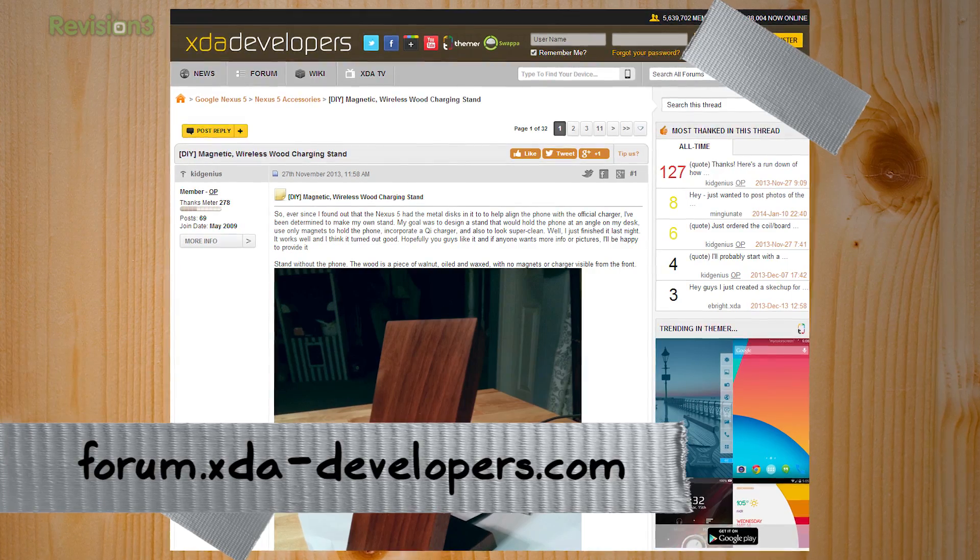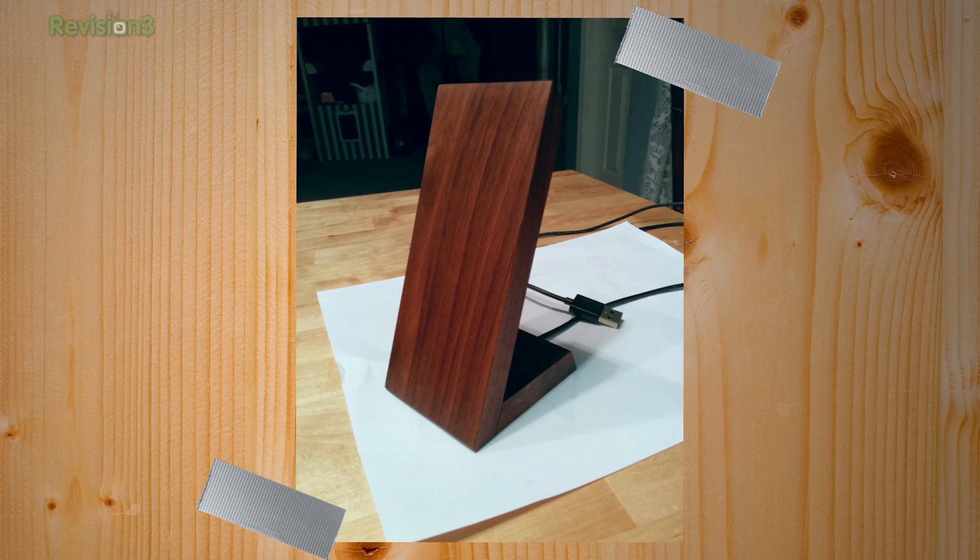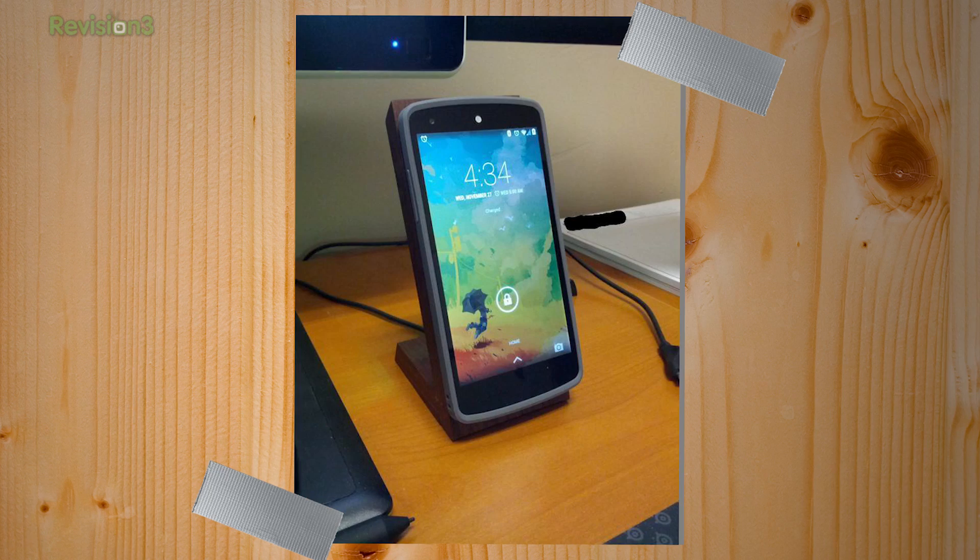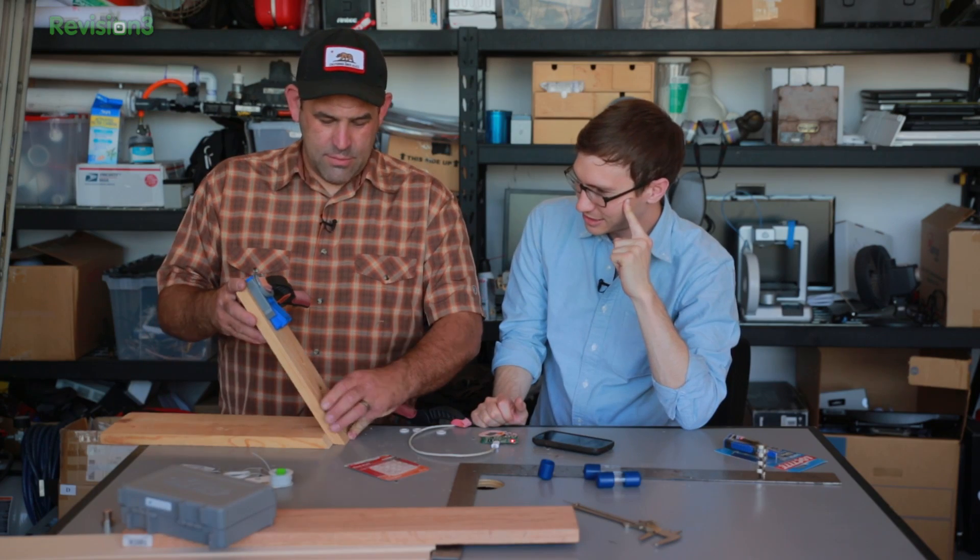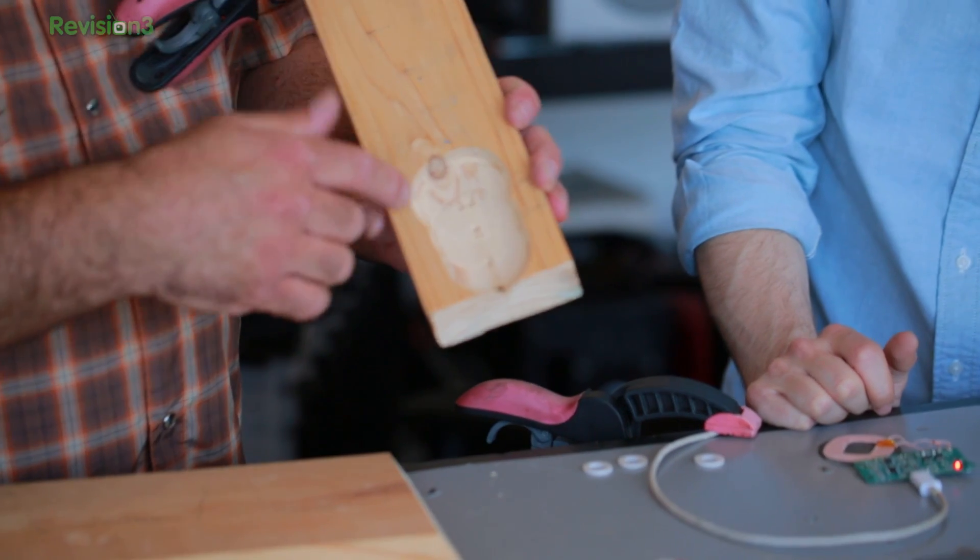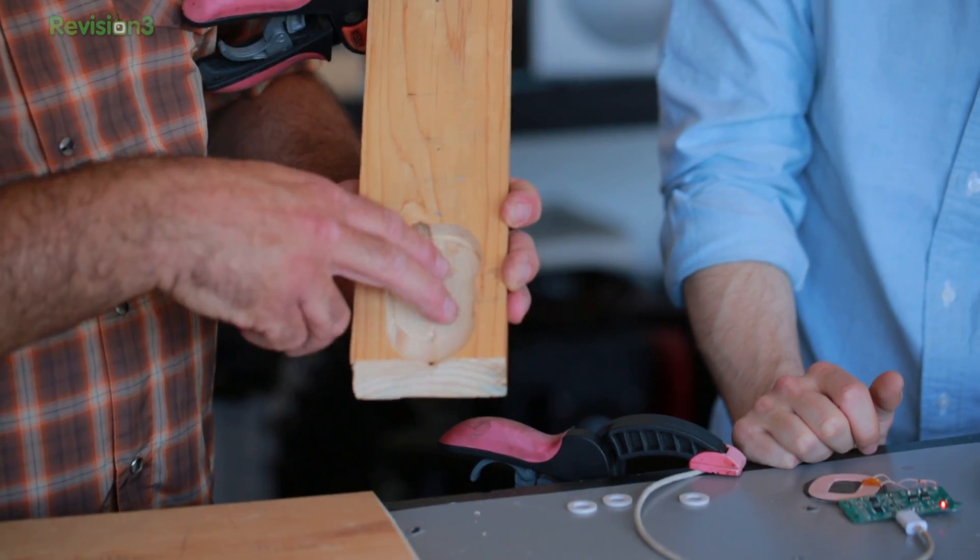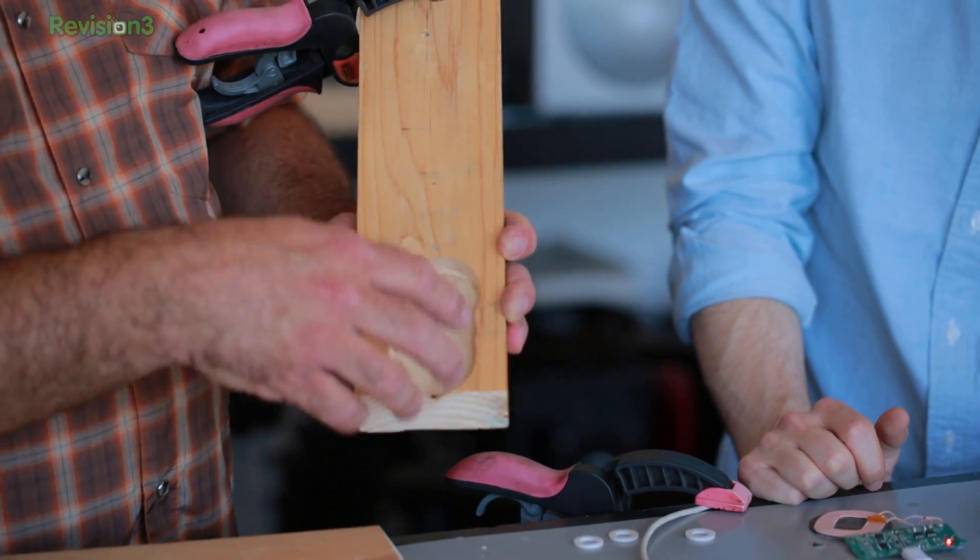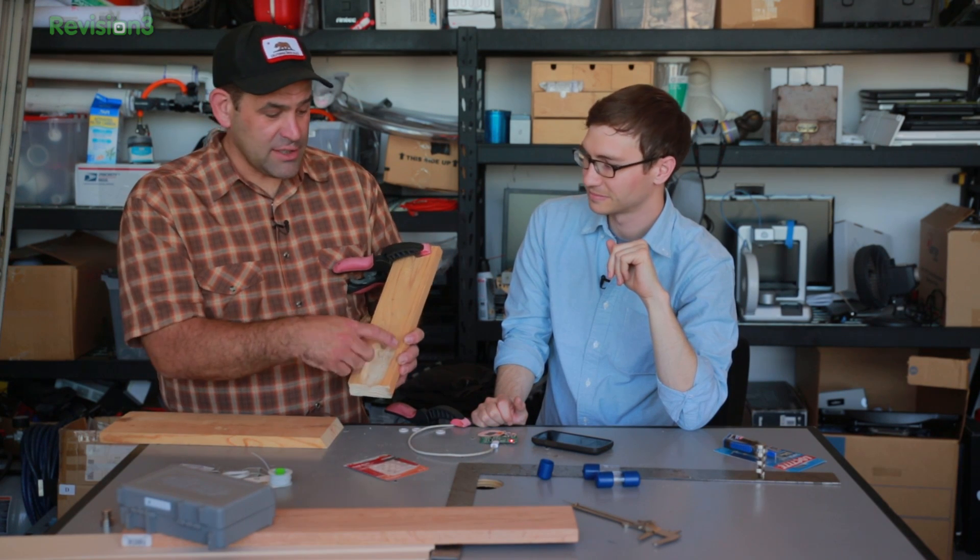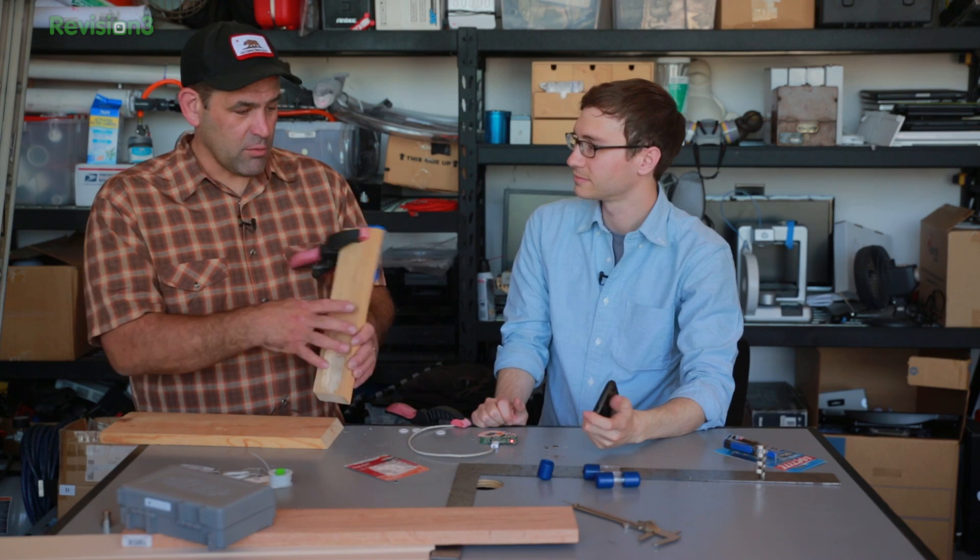Yes, so I saw on the XDA forums, someone built a really nice charger where they took one of these and put it and made a really nice looking stand. There's a little half mock-up that we made. We spent a bunch of time mocking this up. Essentially, we're going to drill down as thin as we can with the Forstner bit. We're going to mount the wireless coil. In theory, we're going to put some magnets in that will help hold the phone to the charger, keep it from falling over.